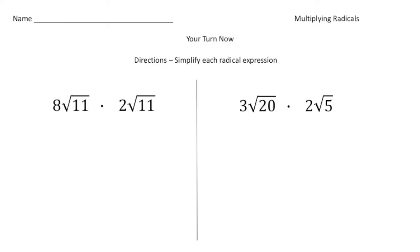All right, welcome back. Let's see, do these practice problems. So we have 8 radical 11 times 2 radical 11. So again, step 1, multiply the coefficients, so 8 times 2 is 16. And then next step, multiply what's inside the radical sign, so 11 times 11 is 121.